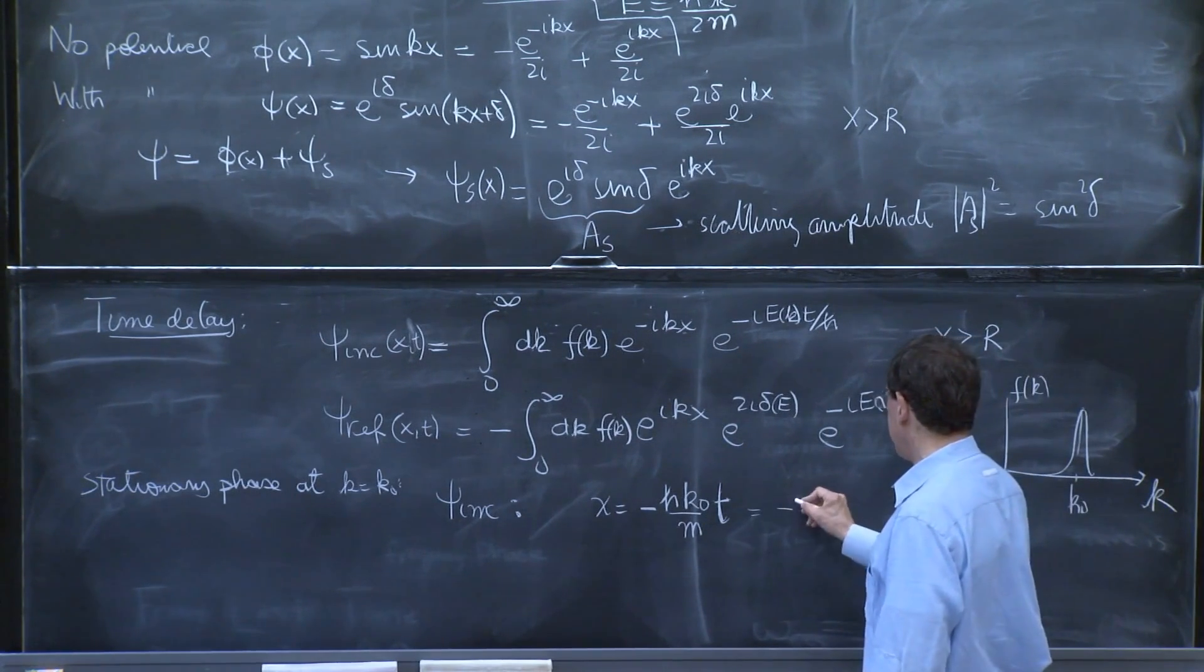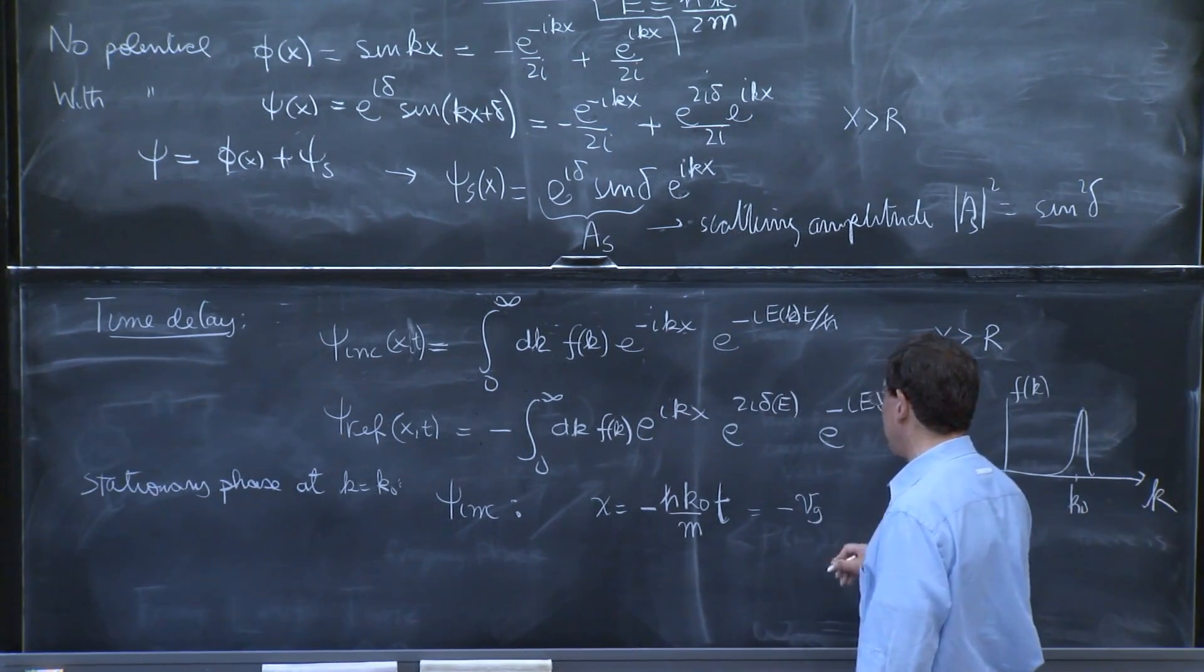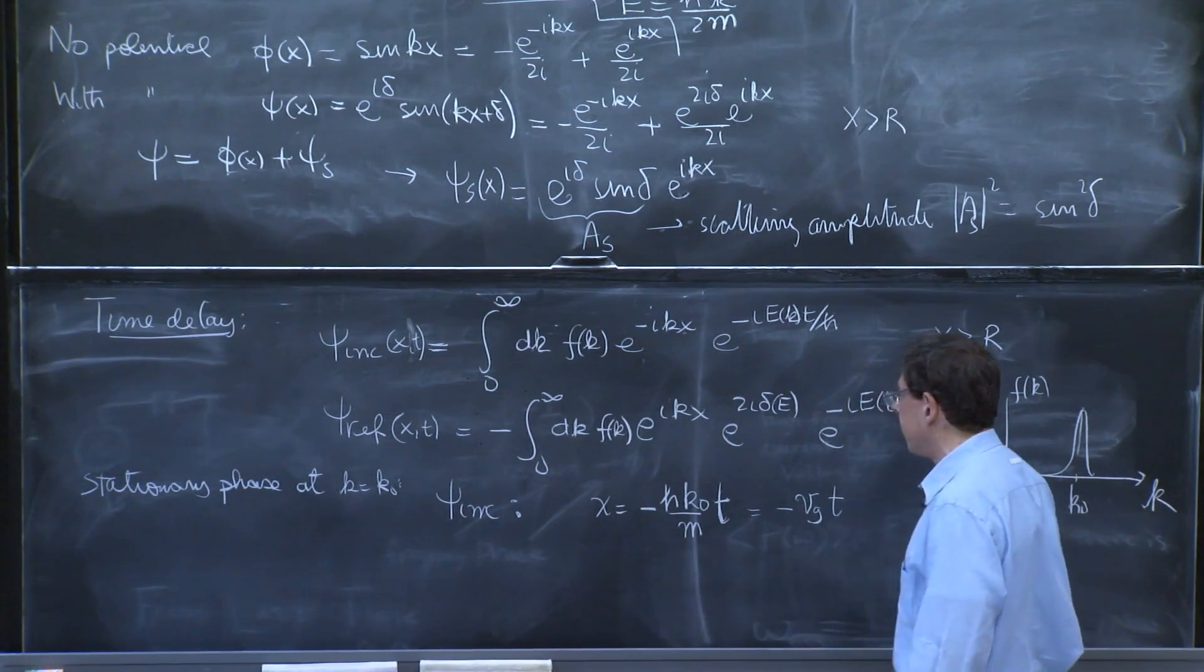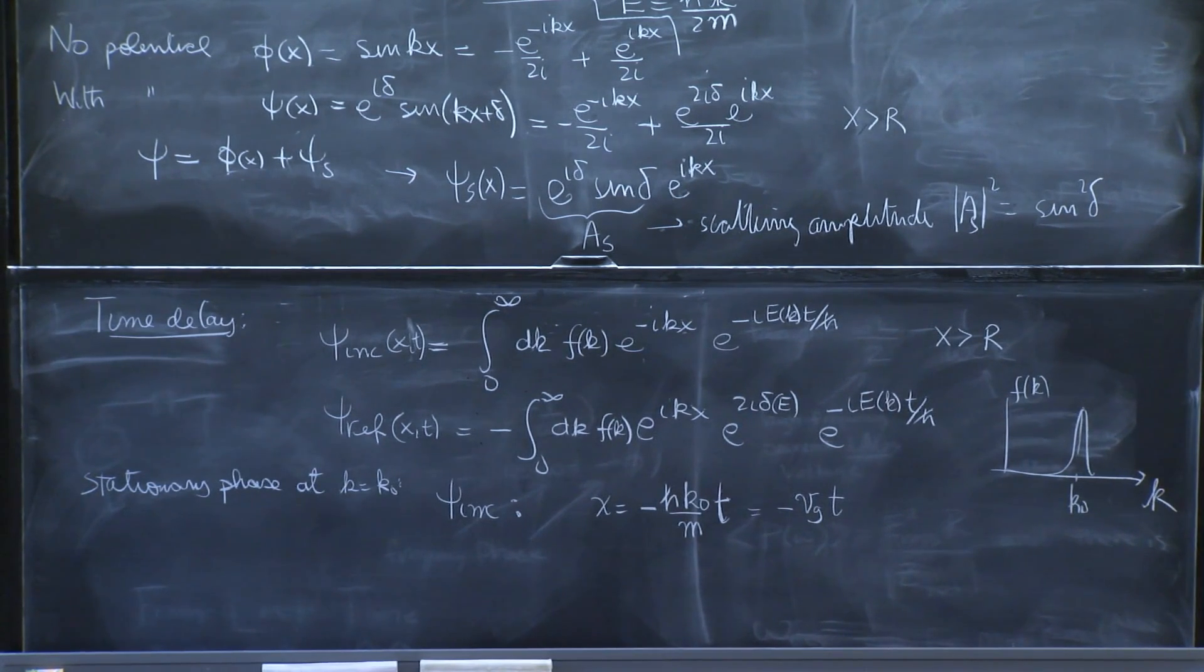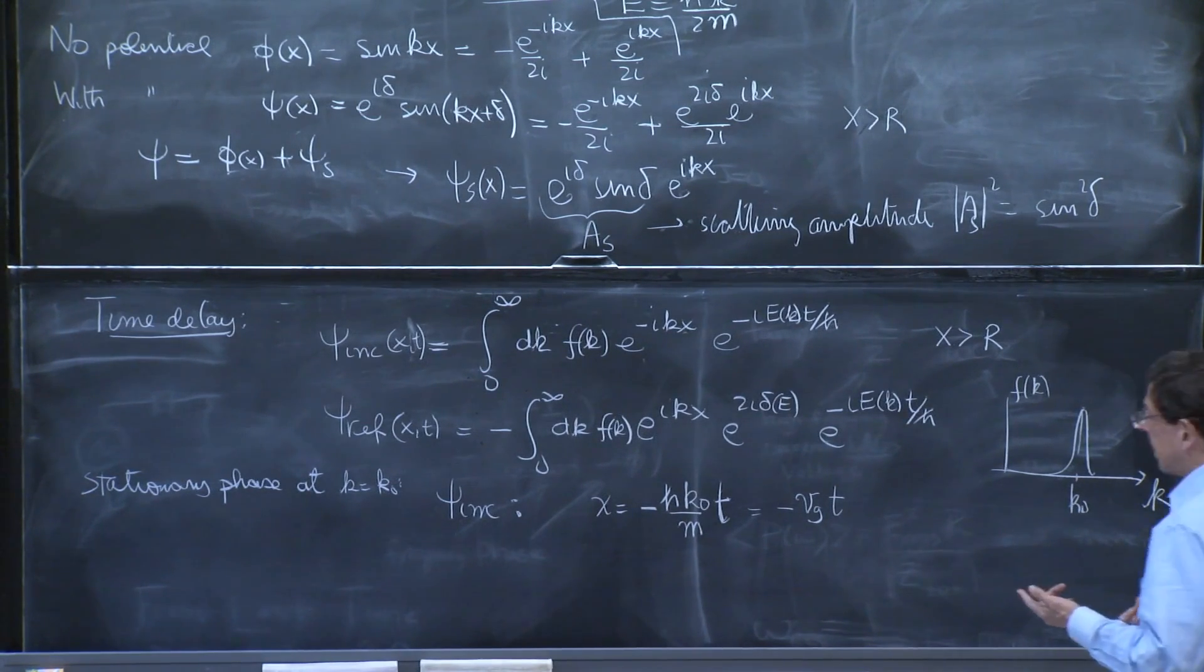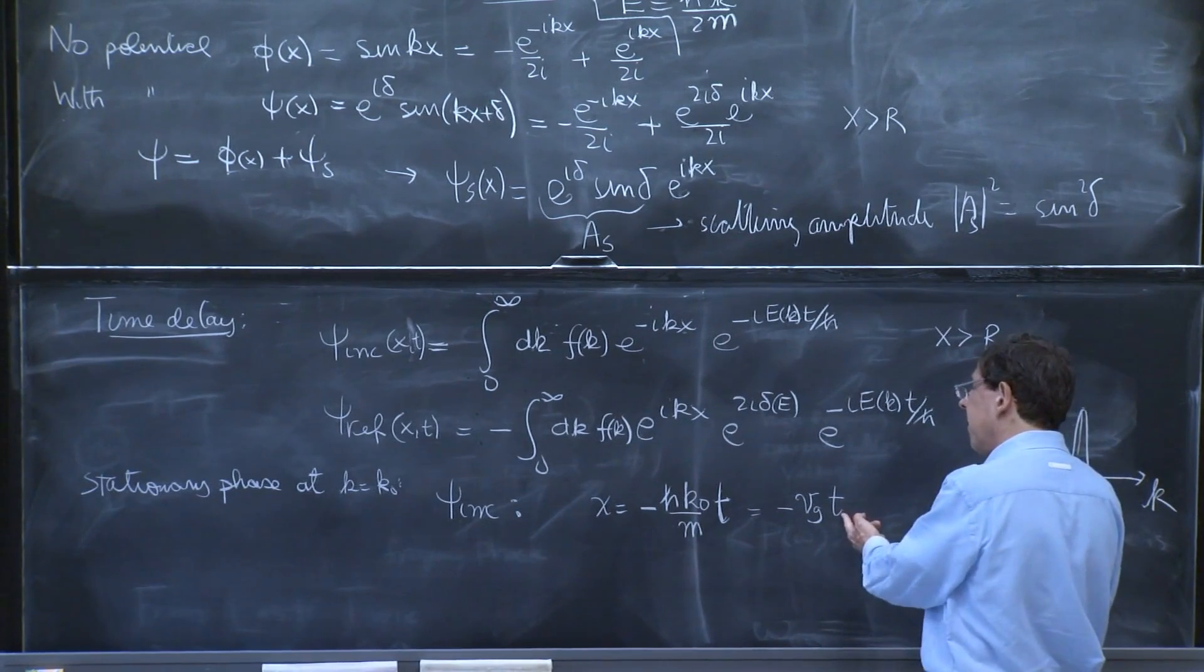Or minus some v velocity, group velocity, times t. That is the condition for a peak to exist. The peak satisfies that equation. And this makes sense when t is negative.